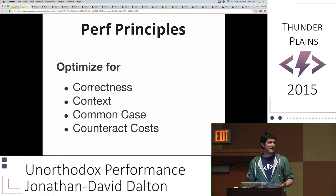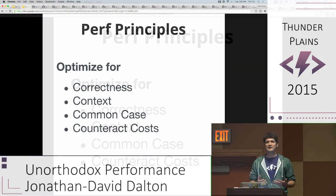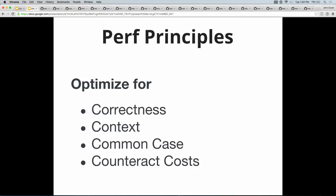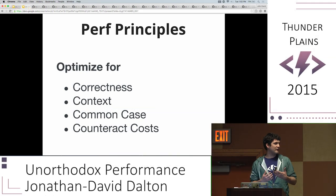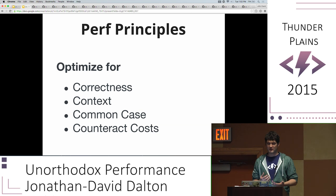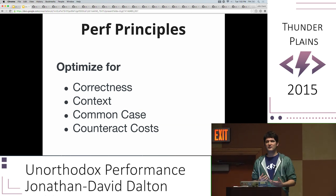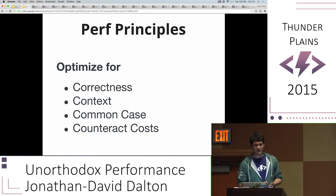The first principle is you optimize for correctness. It turns out doing things correctly doesn't necessarily align with doing things fast or performant. So you have to get creative to do things correctly without incurring a cost. You'll see optimizations like this applied for things like ES5 or ES6 shims — you want the functionality without the crippling performance of following the spec to a T.